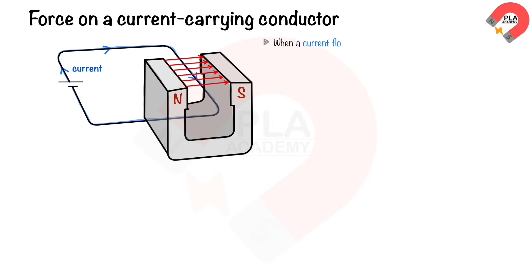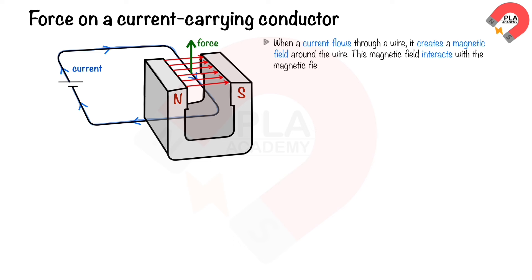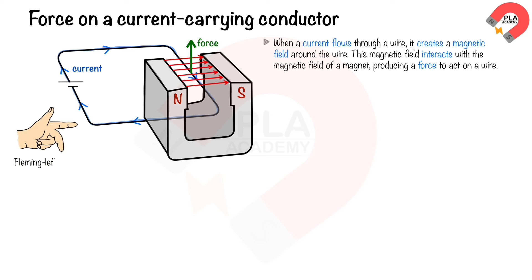Force on a current-carrying conductor wire: when a current flows through a wire, it creates a magnetic field around the wire. This interacts with the magnetic field of a magnet, producing an upward force on the wire. The Fleming left-hand rule determines the direction of this force: the index finger points in the direction of the magnetic field, the middle finger points in the direction of the current, and the thumb points in the direction of the force or motion — all three fingers are perpendicular to each other.